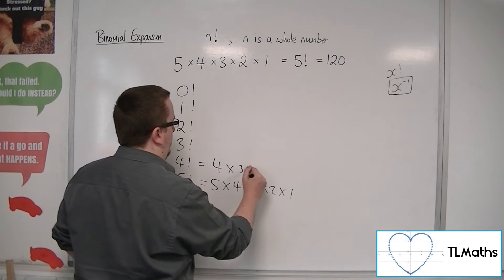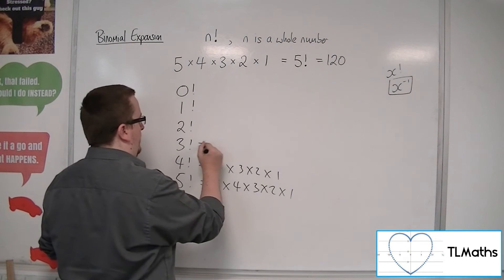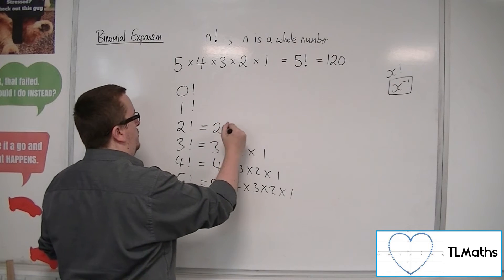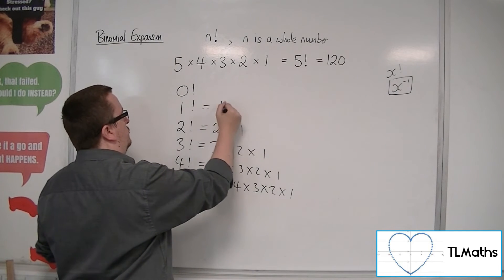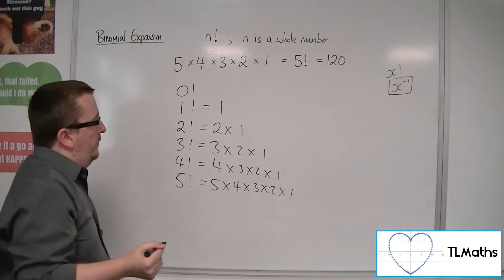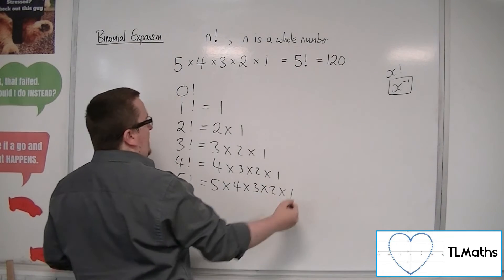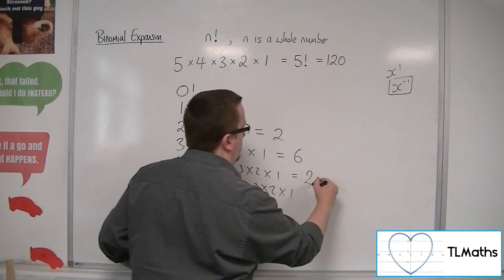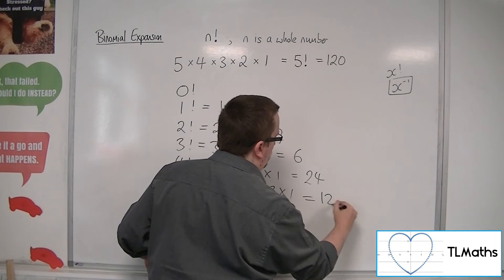Four factorial is four times three times two times one. Three factorial, three times two times one. Two factorial is two times one. And one factorial is just one. So actual values of these is two, six, so multiplying by three, multiplying by four is 24, multiplying by five is 120.